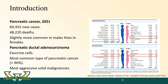Pancreatic cancer is one of the 10 leading cancer types among both sexes in the United States during 2021, and it accounts for 3% of all estimated cancer cases and about 8% of all cancer deaths. According to the American Cancer Society, around 60,000 people will be diagnosed with pancreatic cancer and 48,000 people will die during 2021.